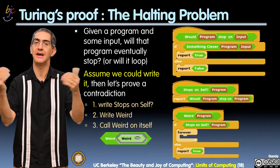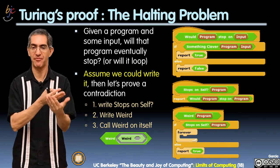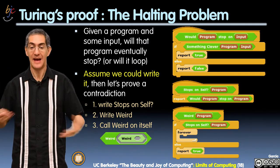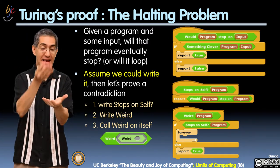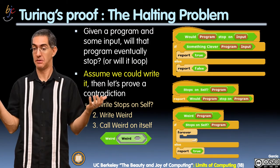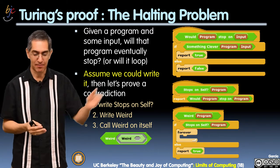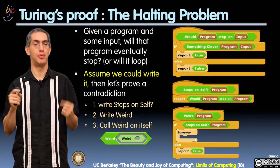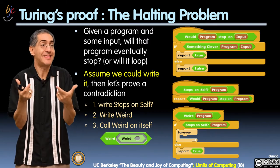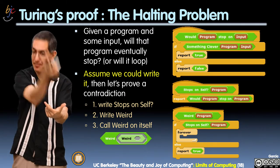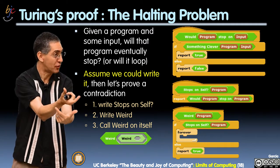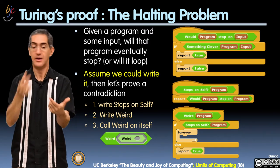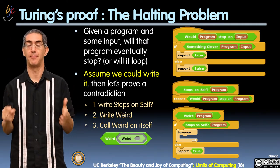Because you're in Beauty and Joy of Computing, you know that programs as data is not a big deal. I can pass in map — something that takes a function as data. So you can see that this block 'would program stop on the input' — I can write that. The program would be a block I'd drop in for program, and input is whatever: a list, a number, a sentence. Would program stop on that.